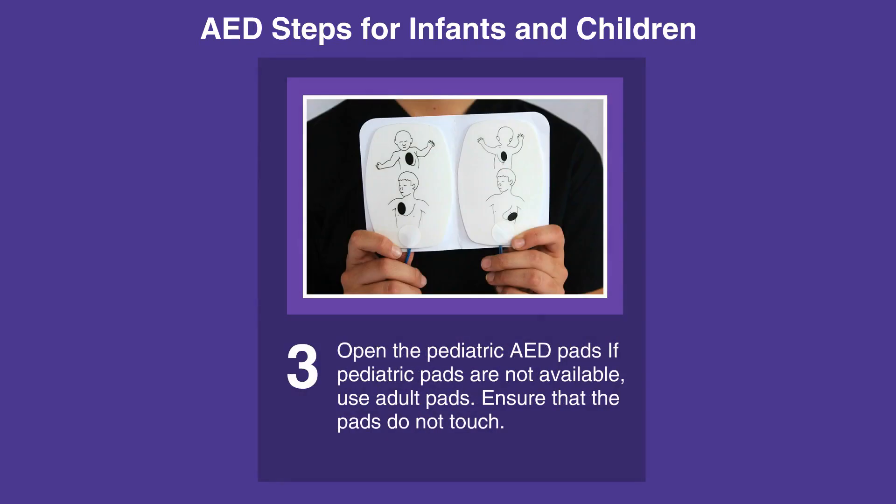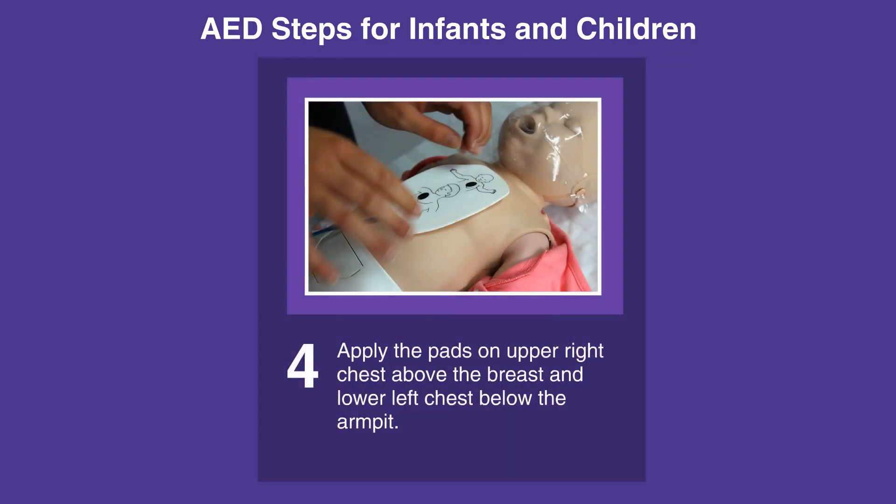Open the pediatric AED pads. If pediatric pads are not available, then use the adult pads. Ensure that the pads do not touch. Peel off the backing. Check for a pacemaker or defibrillator. If either are present, do not apply pads over the device. Apply the pads on the upper right chest above the breast and lower left chest below the armpit.